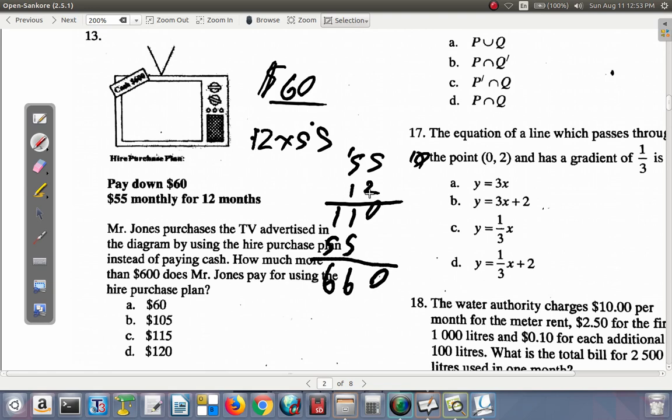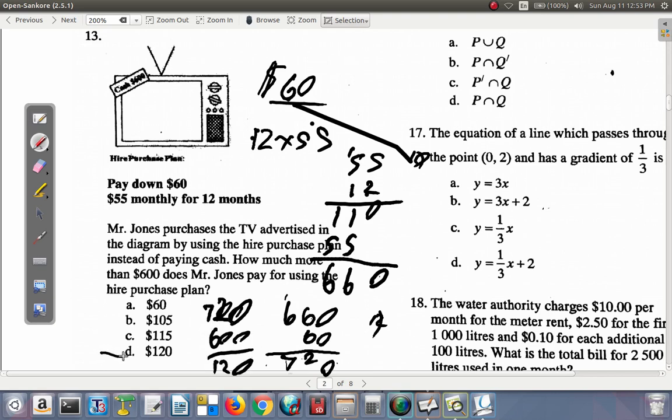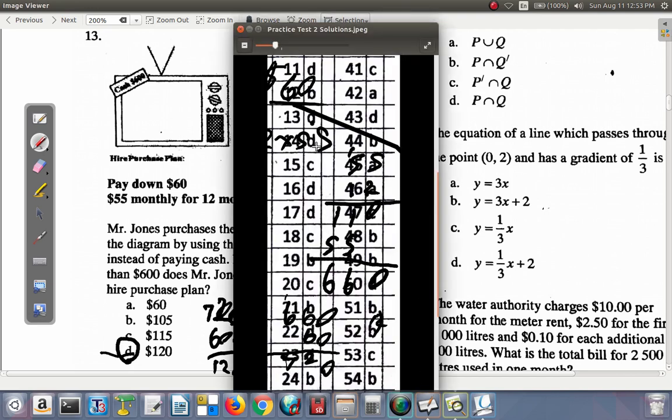You would pay $660 for the monthly payment, and remember, you had paid $60 down. The $660 plus $60 is going to be $720. And they asked how much more does he pay, so in this case it's $720 minus $600, which is $120. So question 13 is D.